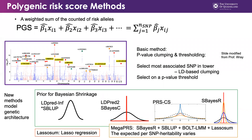Polygenic risk score of an individual is a weighted sum of the count of risk alleles. Based on GWAS summary statistical results, the basic method for polygenic risk score is p-value clumping and thresholding. This method is simple but it doesn't formally model different genetic architectures. There are many new methods that try to model the genetic architecture for the trait of interest, such as using different priors in Bayesian regression like LDpred2 infinitesimal model, LDpred2, SPSC, PRS-CS, and SPSR.